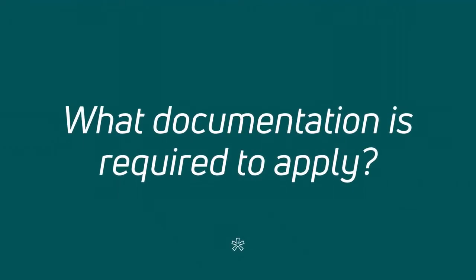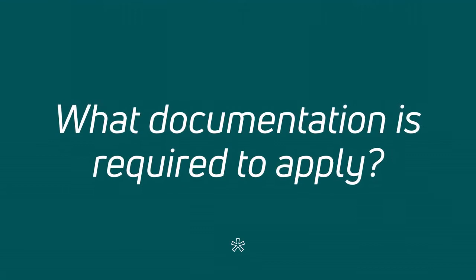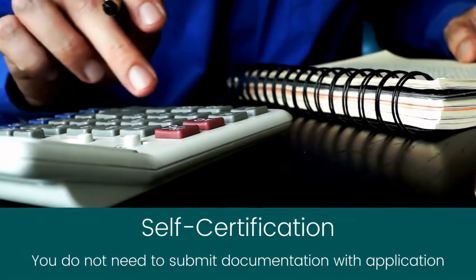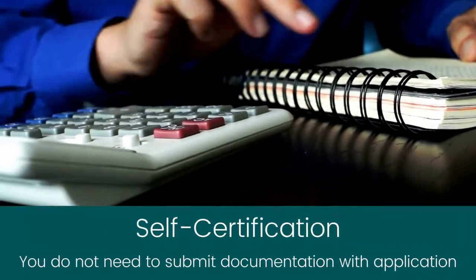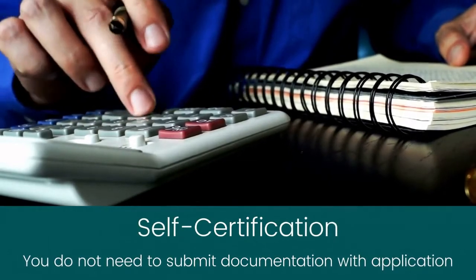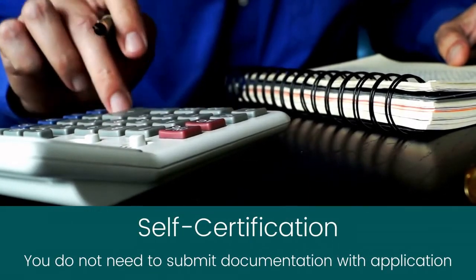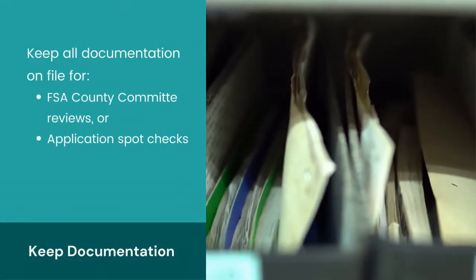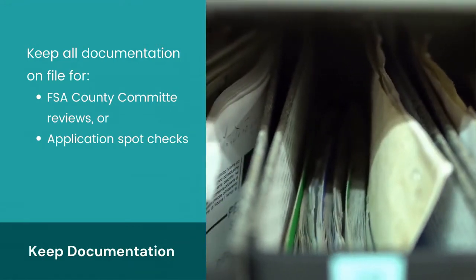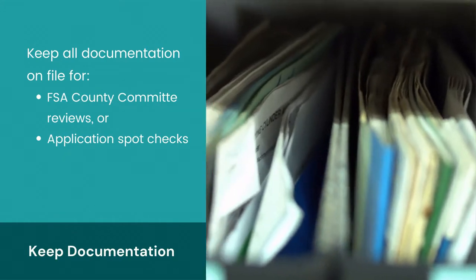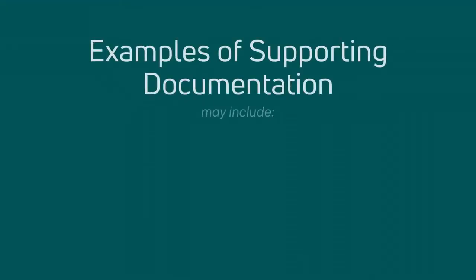What sort of production or sales documentation is required? To complete the CFAP II application, farmers will need to reference and report on their production, inventory, or sales records. However, CFAP II is a self-certification program, meaning that no sales or inventory documentation is required to submit the application. That said, applications are subject to county committee review and spot check, so a farmer must be able to substantiate their amounts and should keep all documentation on file for three years in the event they need to provide it.